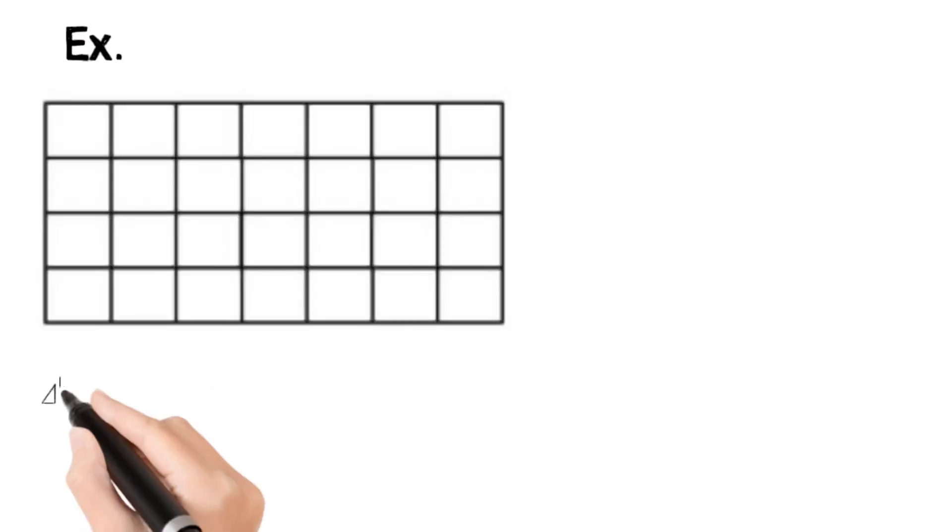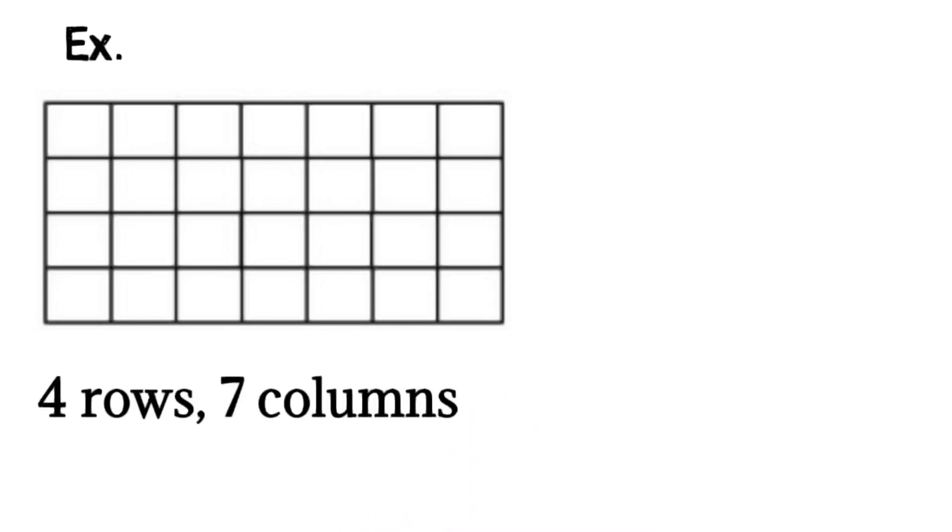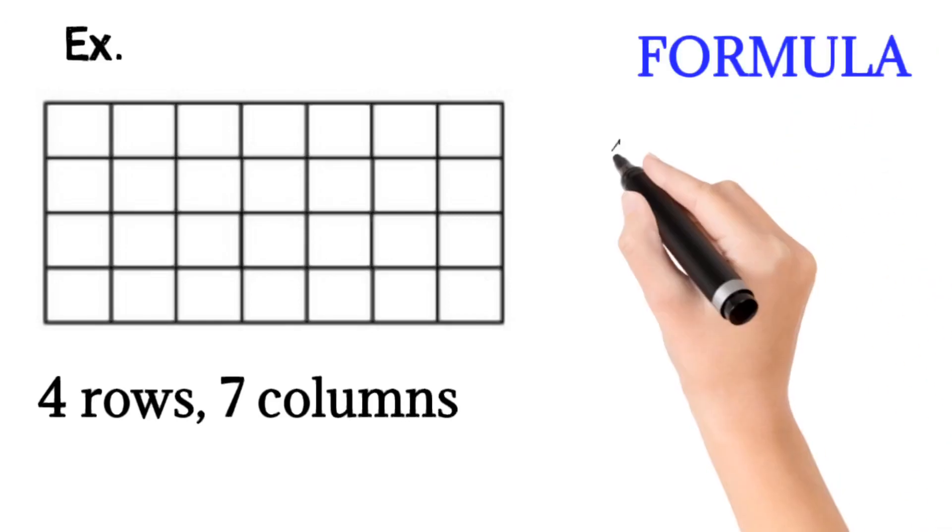Now we will see one more example. Consider this figure which has 4 rows and 7 columns. Now if I ask you to find the number of squares manually, it is very difficult. So we have to use this formula.